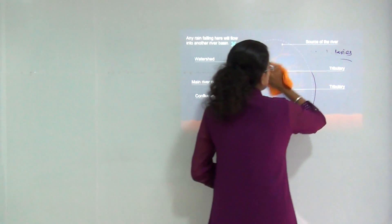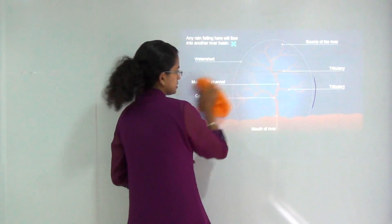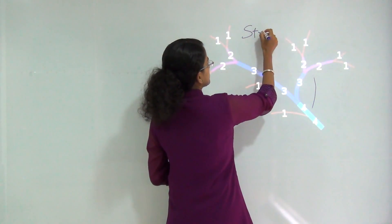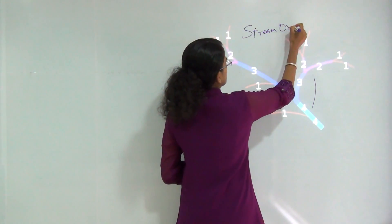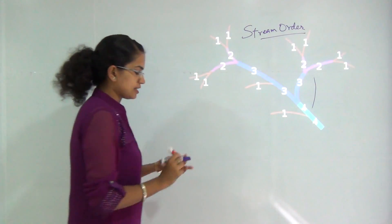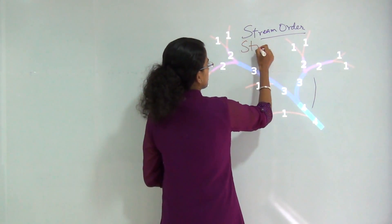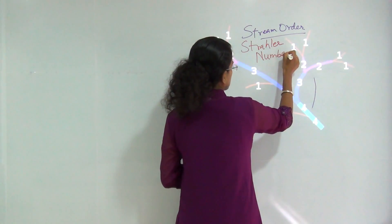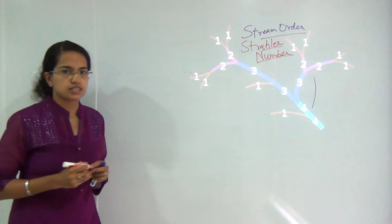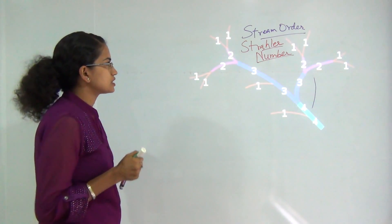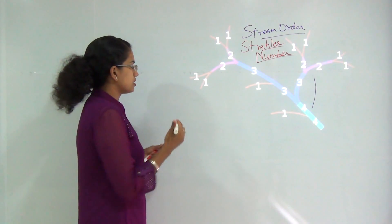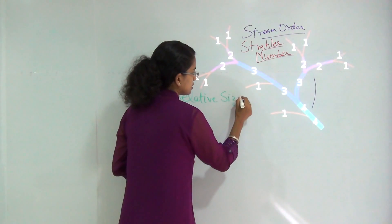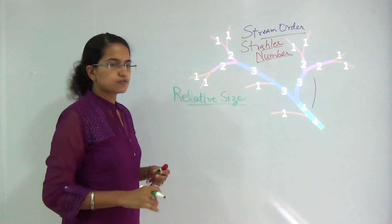Every stream that joins into another stream is given a number known as the stream order. This stream order is also known as the Strahler number, after the name of the person who discovered this concept. Stream order helps you explain the relative size of any stream or any water channel that is flowing through.